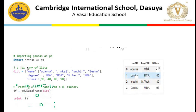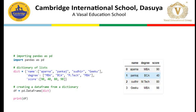First we take the example of a DataFrame. We have created a dictionary of lists, where we have basically three attributes: name of the students, their corresponding degrees, and their scores. Based on that, we have a dictionary, then we converted that dictionary to a DataFrame, and on the right-hand side you can see the contents of the DataFrame.